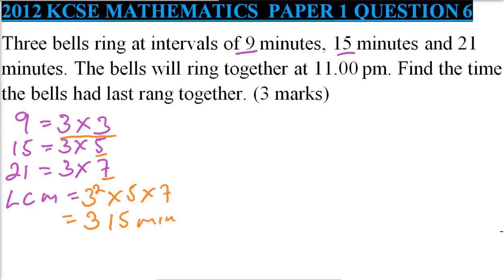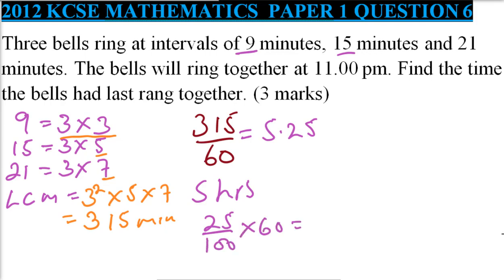To convert this to hours, we divide by 60. So 315 divided by 60, using your calculator you'll get 5.25. This means 5 hours. We convert 0.25 into minutes: 25 divided by 100 multiply by 60, which gives 15 minutes.